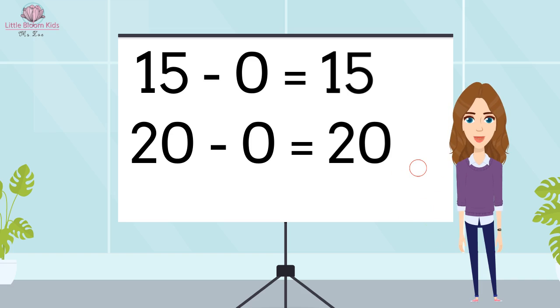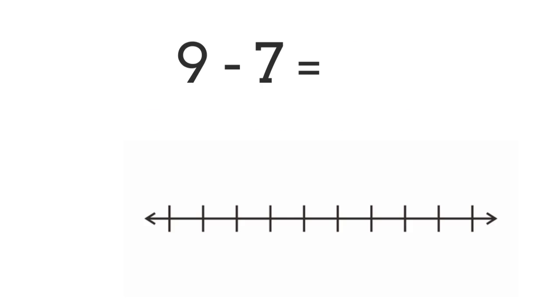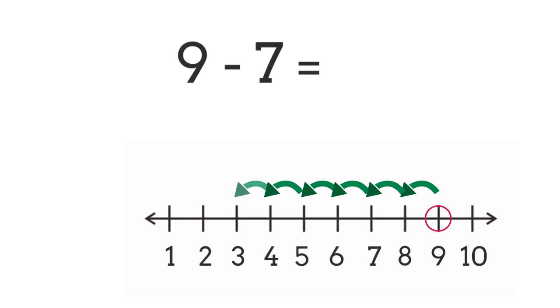Now is your turn. Let's try this example: nine take away seven. Start by drawing the number line. Yes, we're going to start from number nine, going backwards seven times. Exactly, you landed at number two. So nine take away seven equals two. Well done.